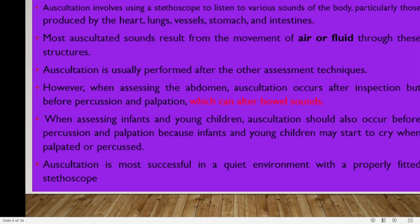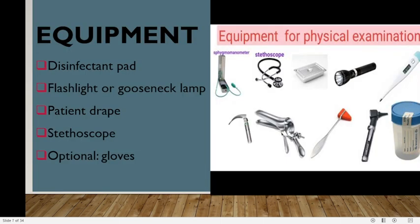The same applies when assessing infants and young children — auscultation should occur before percussion and palpation because infants and young children may start to cry when palpated or percussed. Auscultation is most successful when done in a quiet environment with a properly fitted stethoscope. Equipment needed includes a disinfectant pad, flashlight, patient drape, stethoscope, gloves, otoscope, sphygmomanometer, and speculum.